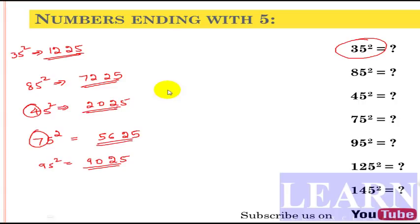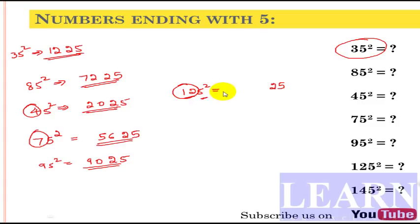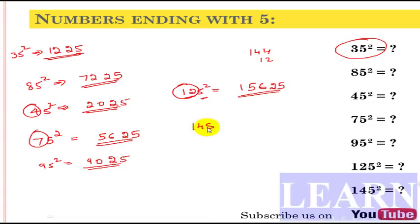Next, 125 squared — a 3-digit number, but the same method applies. The 5 gives 25 at the end. The remaining part is 12, so we need 12 times 13. Using our consecutive number trick: 12 squared is 144 plus 12 gives 156. So 125 squared is 15625.